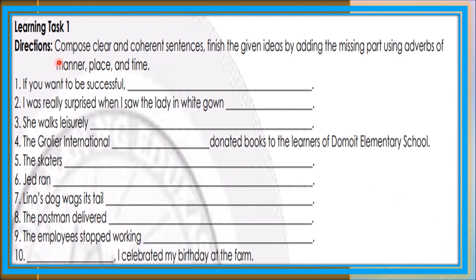For learning task one, compose clear and coherent sentences by finishing the given ideas using adverbs of manner, place, and time. Number one: If you want to be successful — blank. Number two: I was really surprised when I saw the lady in white gown — blank. Number three: She walks leisurely — blank. Number four: The Grolier International — blank — donated books. Number five: The skaters — blank. Number six: Jed ran — blank. Number seven: Lena's dog wags its tail — blank. And more.